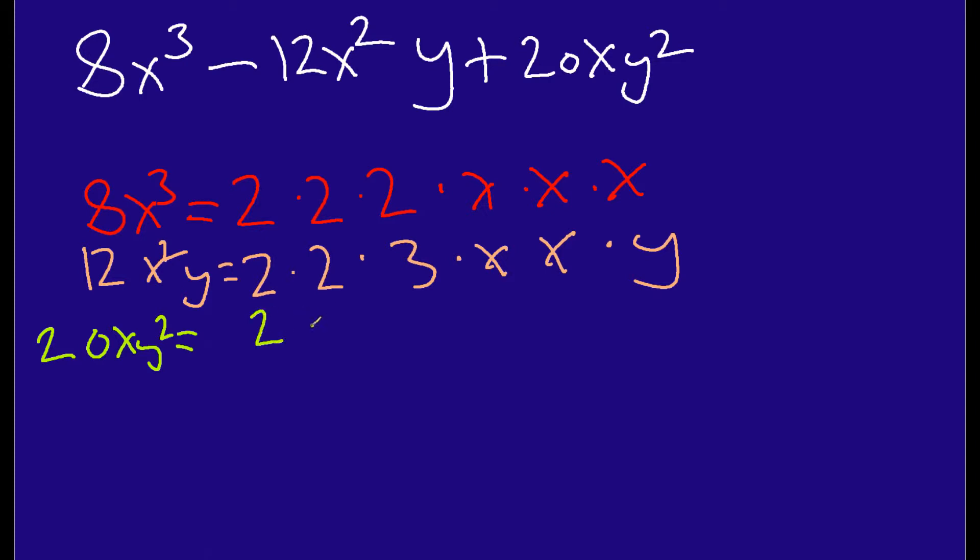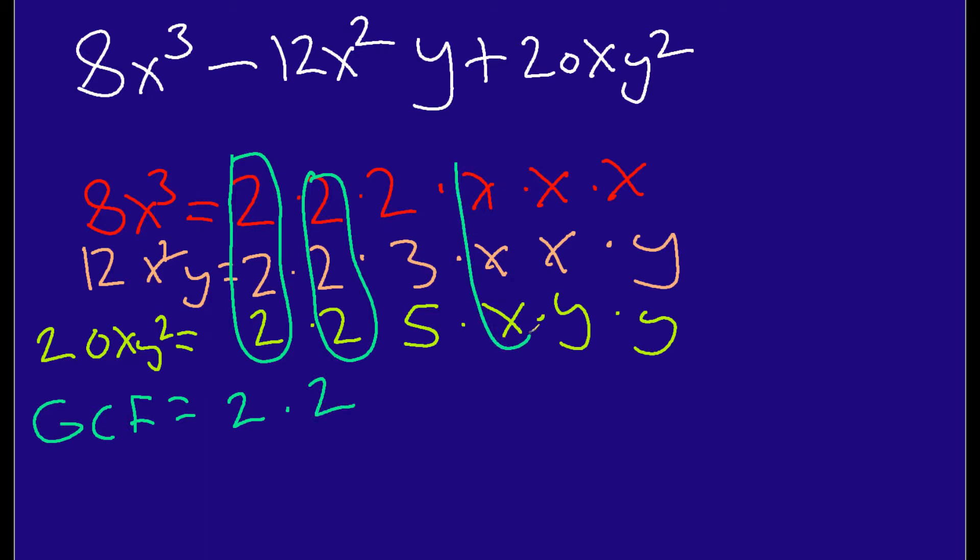And then, I have my x, and then I have a y and a y. Now, to determine the greatest common factor, this is what you do. You look across each column here, and you look for the numbers that are in every single column lined up. So, for example, in this first column, I have all these 2s right here. So, I bring this 2 down. Here, I have all 2s again. I bring this down. And then, lastly, I have all x's here. I bring this x down.